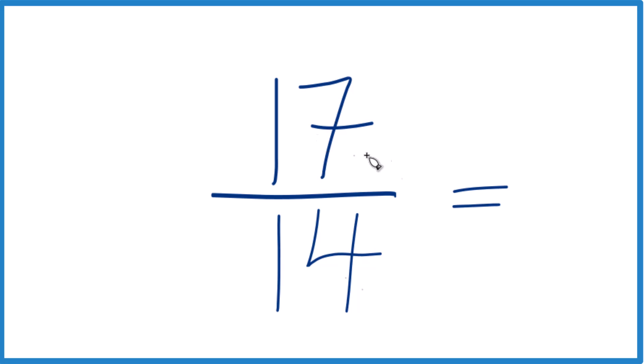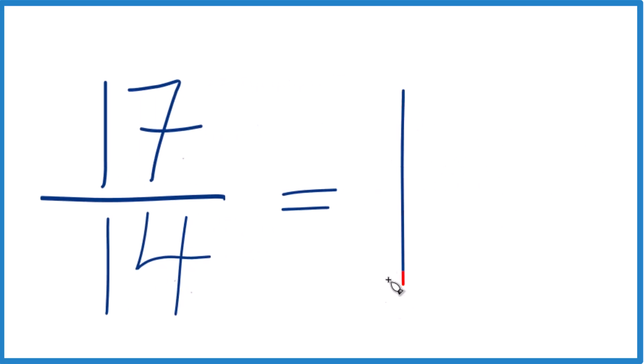14 goes into 17. Well, we know 1 times 14 is 14. We'll have 3 left over. Bring the 14th across. And 17 fourteenths equals 1 and 3 fourteenths. So that's our mixed number.